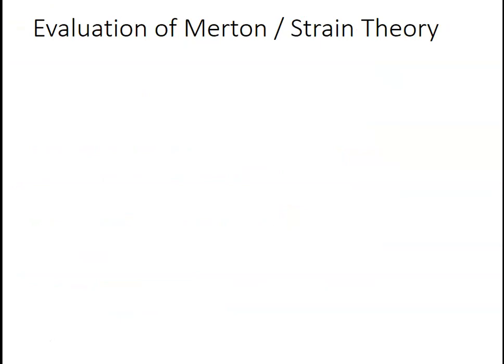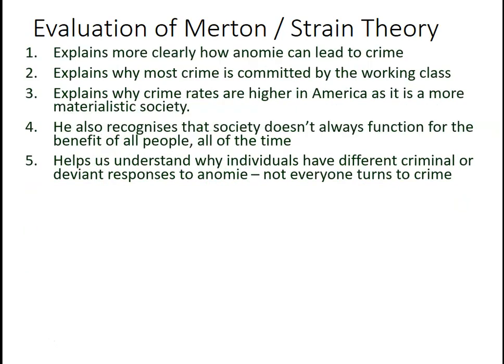Moving to evaluation of Merton's strain theory - the strengths: he develops Durkheim's idea of anomie and helps us understand how it can lead to crime. By identifying that certain groups are more likely to suffer strain, he helps explain why statistically most crime is committed by the working class, whose opportunities are more likely to be blocked. He also explains why crime rates are higher in America as a more materialistic society. And unlike typical functionalists who see society through rose-tinted glasses, he recognizes that society doesn't function for everyone's benefit equally.